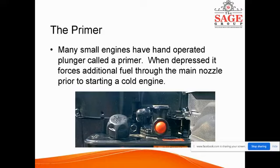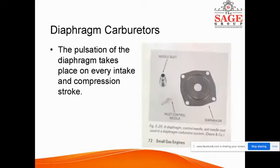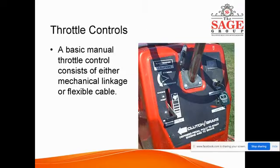The diaphragm carburetor does not have a float. Instead, it uses the difference between atmospheric pressure and the vacuum created in the engine to pulsate a flexible diaphragm. This pulsation of the diaphragm takes place on every intake and compression stroke.